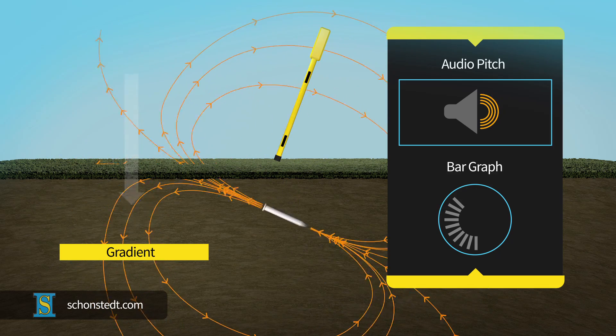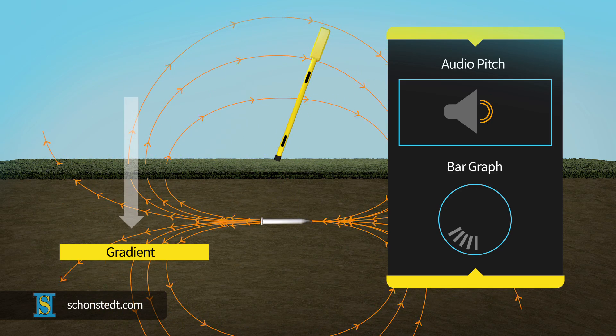Likewise, the orientation of the buried object also has an effect on the size of the gradient detected. The same object oriented vertically will generally produce a larger difference.